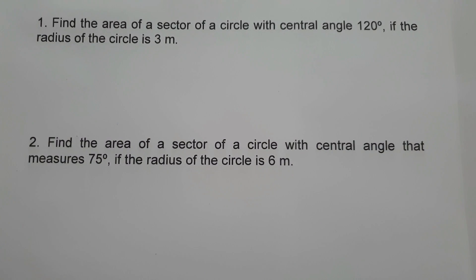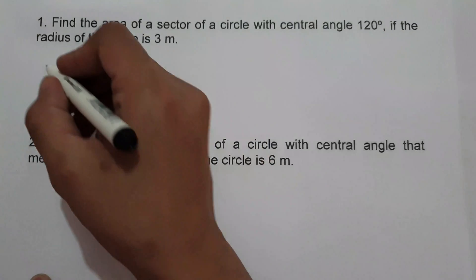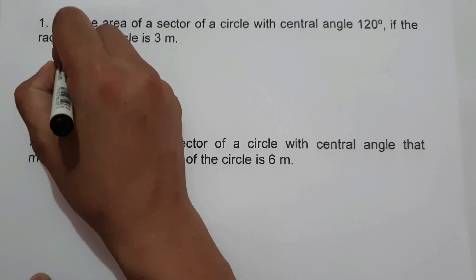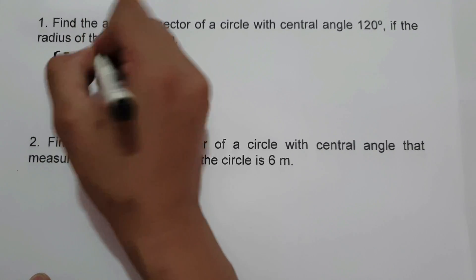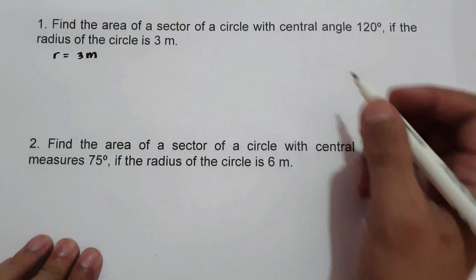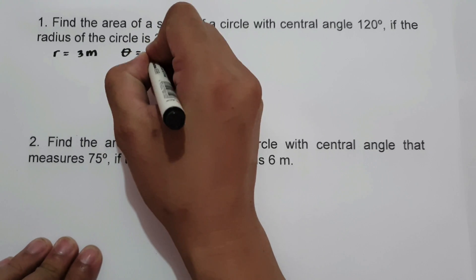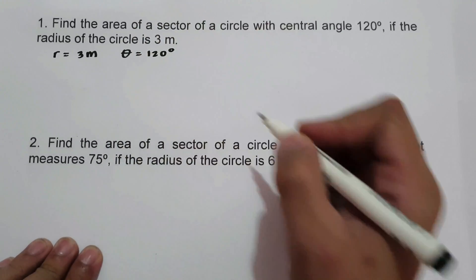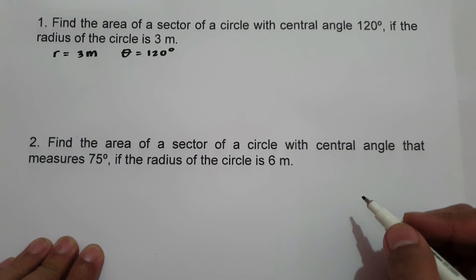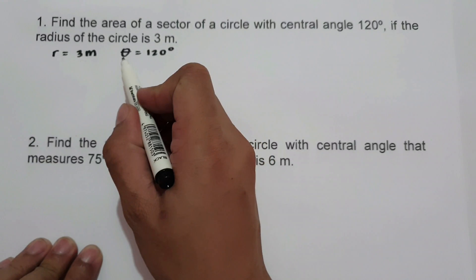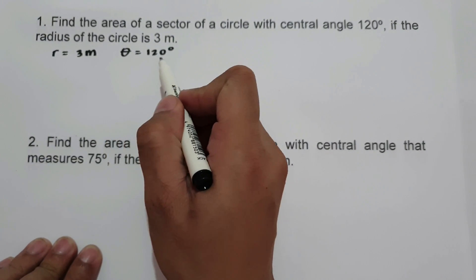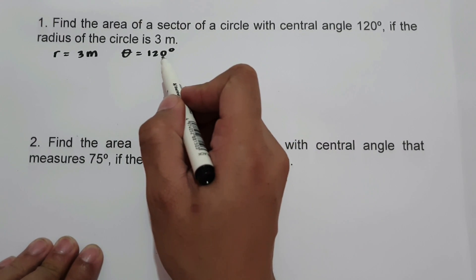On the first example, find the area of the sector of a circle with a central angle of 120 degrees if the radius of the circle is 3 meters. Let us identify first the given: radius is 3 meters, and central angle is 120 degrees. To find the area of the sector, the central angle must be in radian, so let us convert 120 degrees to radian.